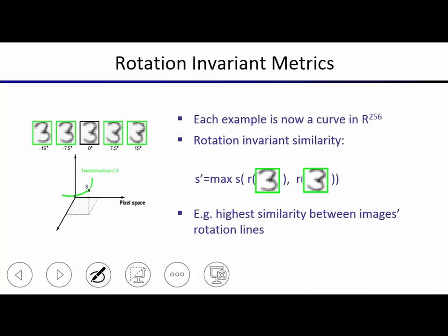If you want more invariance, you can think about what you care about — for digit classification: invariance to rotation, scaling, translation, and stroke thickness. You want to say a digit here and a rotated version of that digit are quite similar. You can redefine your similarity measure as the max over all rotated versions you could pick. Within 15 degrees of rotation in each direction, you see how close you can get them — whatever is most similar becomes your similarity metric, making you invariant to rotations up to 15 degrees.